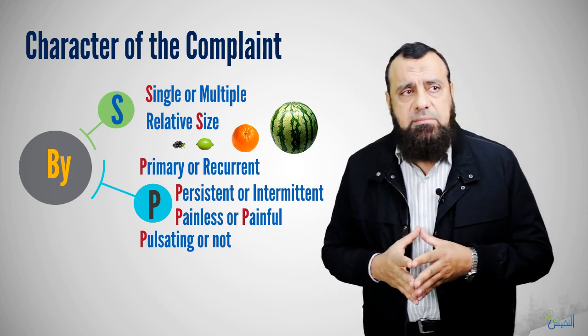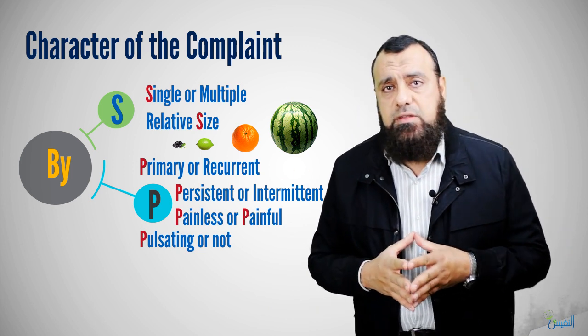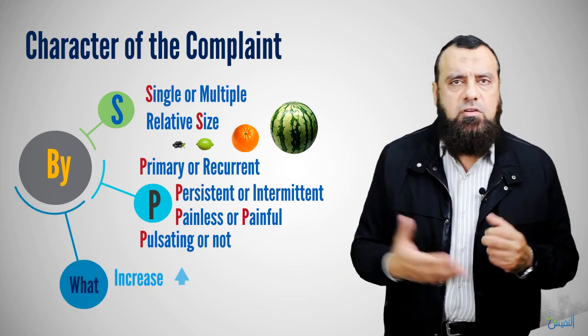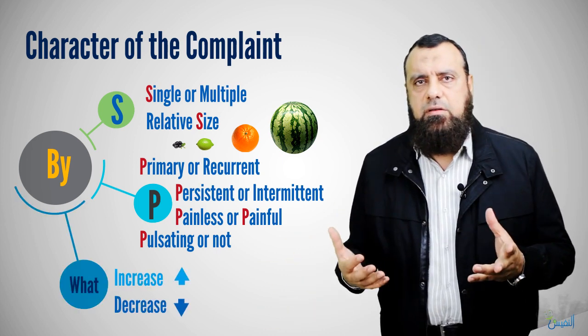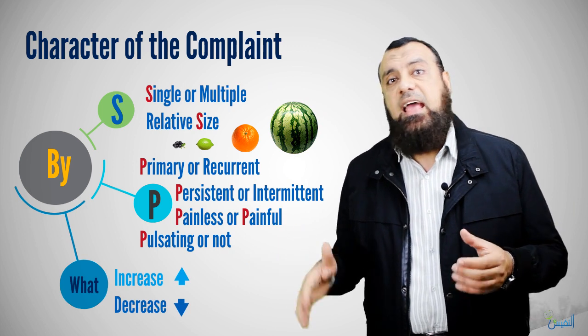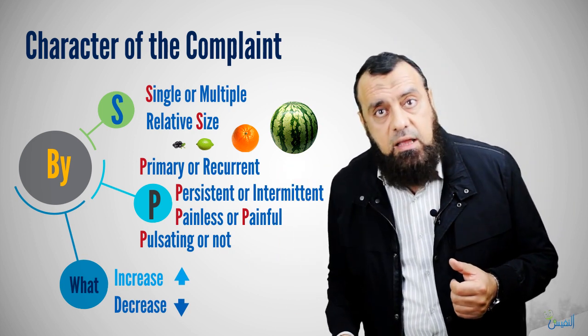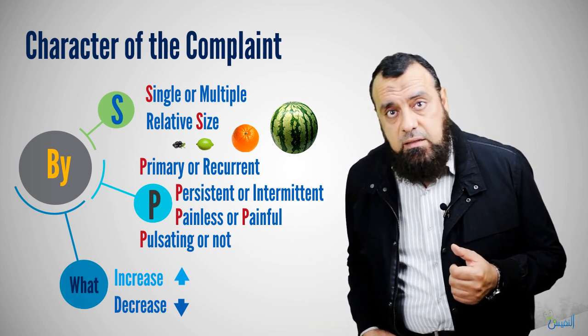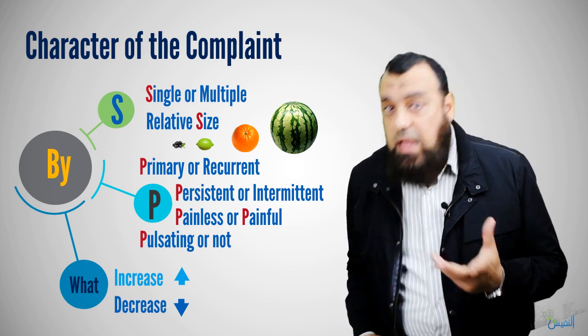Is it pulsating or not pulsating? These are the P's. The third item in the character of the swelling is what increases and what decreases it. For example, hernia increases by coughing and straining and decreases by lying down and patient reduction.